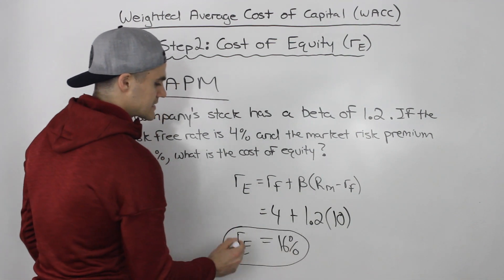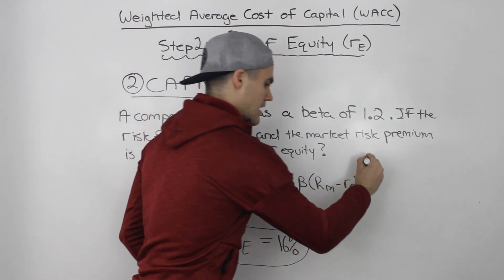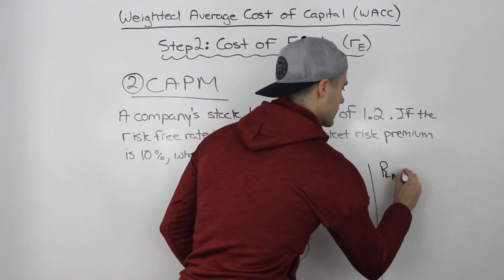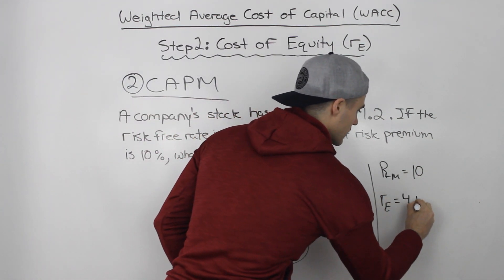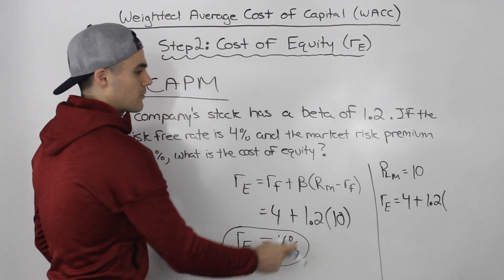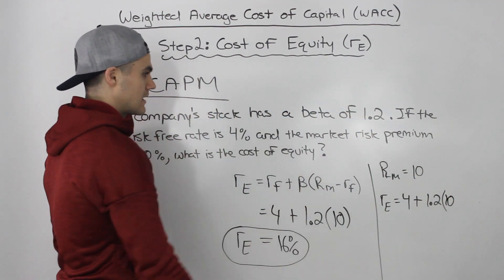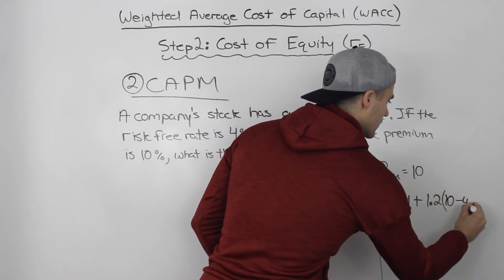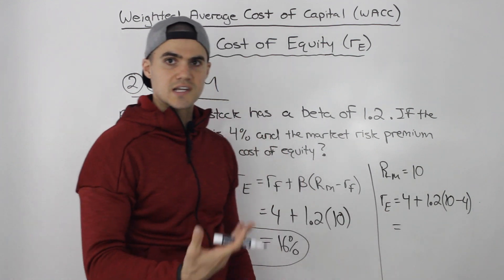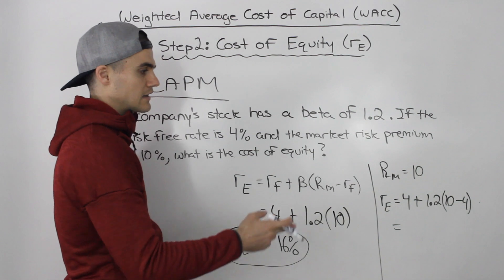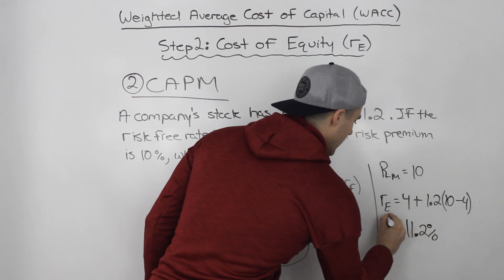Now let's switch it up. If instead the return on the market is 10% — not the market risk premium — the calculation changes. We must subtract the risk-free rate: market risk premium = 10% - 4% = 6%. Then RE = 4% + 1.2 × 6% = 4% + 7.2% = 11.2%. So the return on equity would be 11.2% instead of 16% — quite different, so be aware of what you're given.